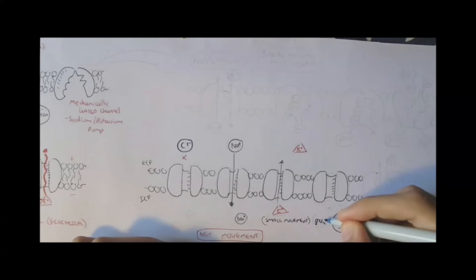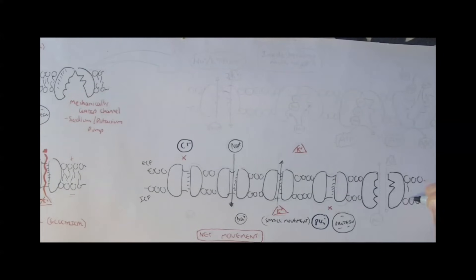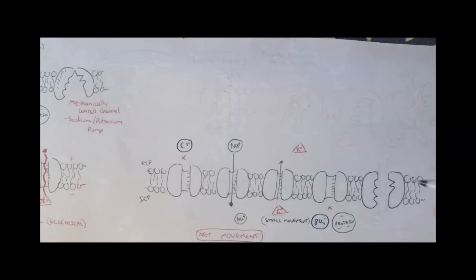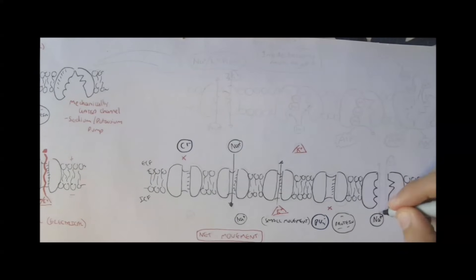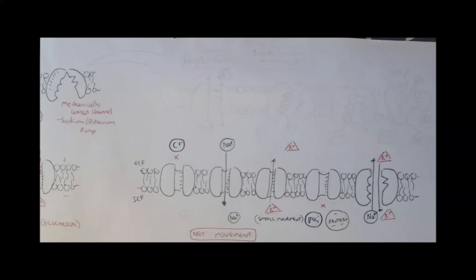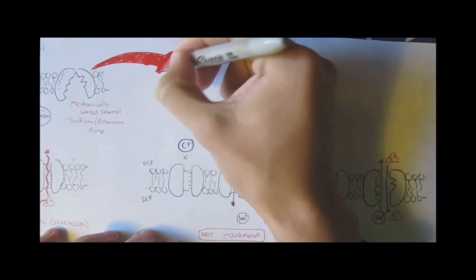Phosphate and proteins will stay in because they are too big. The sodium-potassium pump will then pump sodium, which just came in, out, and pump potassium in. So now let's look at how the sodium-potassium pump works.